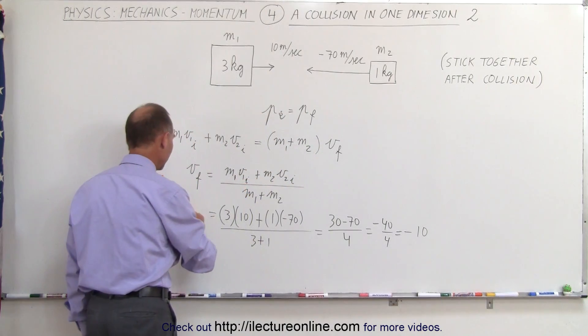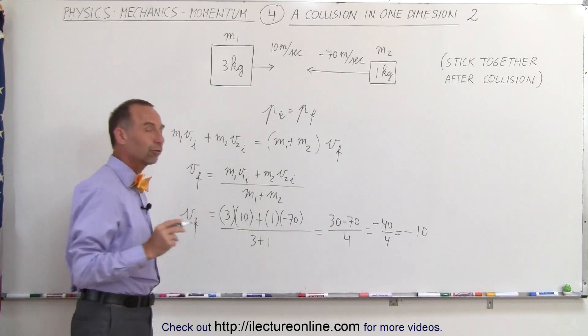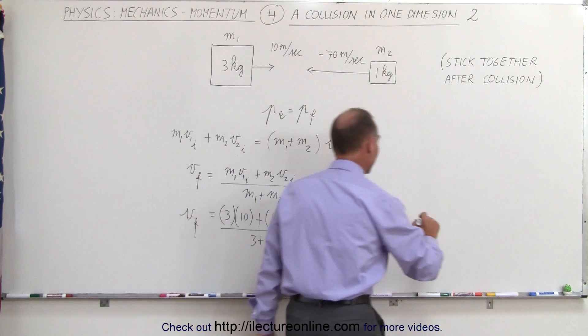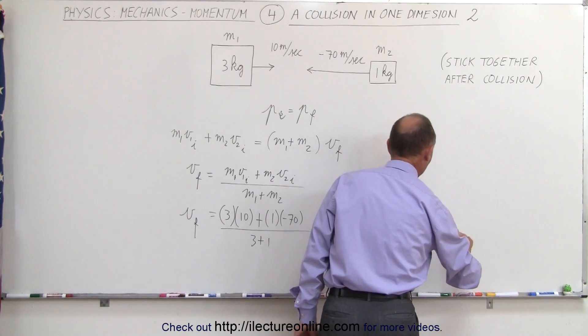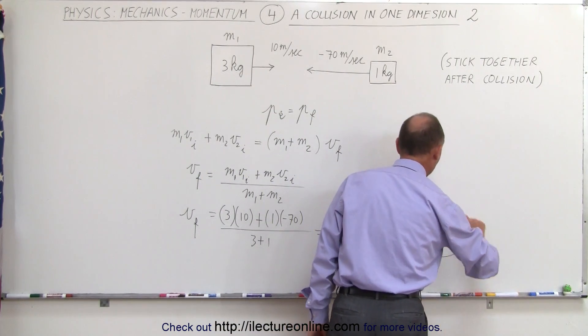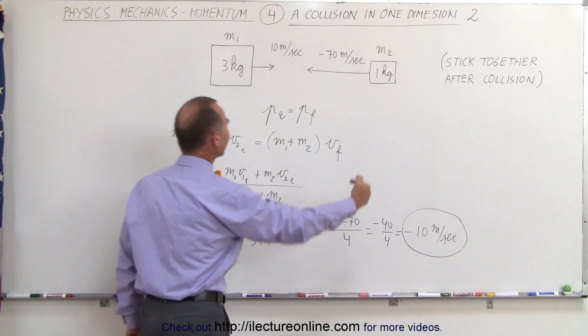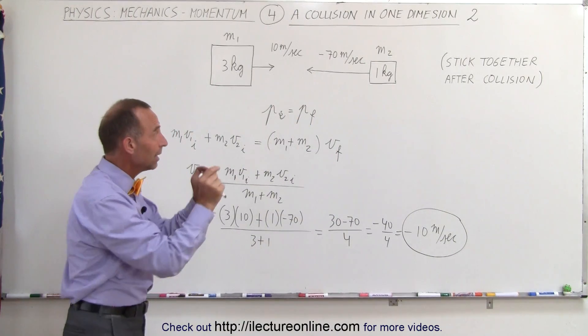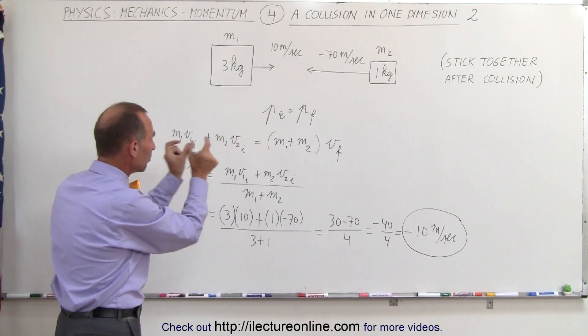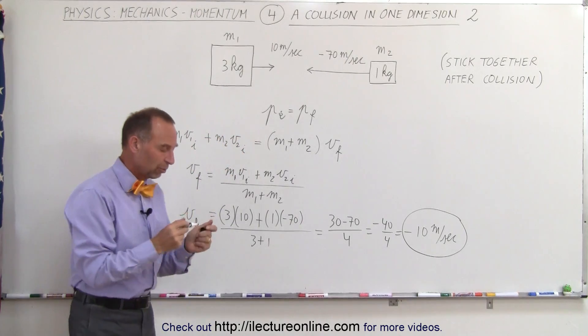Now remember we're looking for velocity, velocity final and the units for velocity are meters per second. So notice that the final velocity of the two objects together after the collision is a negative 10 meters per second, which means both will be connected, they stick together and they'll be moving to the left at 10 meters per second.